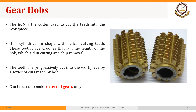The cutting tool used in hobbing is called a hob. It is the cutter used to cut the teeth into the workpiece. It is cylindrical in shape with helical cutting teeth. These teeth have grooves that run the length of the hob, which aid in cutting and chip removal. The teeth are progressively cut into the workpiece by a series of cuts made by the hob. The limitation of gear hobbing is that it can be used to make external gears only.